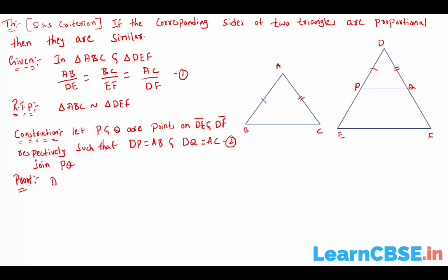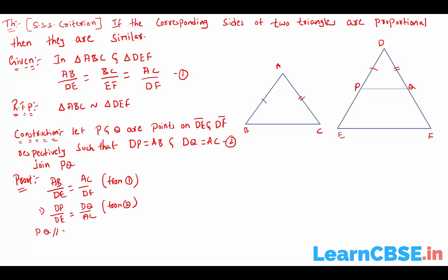We have AB by DE equals AC by DF from equation 1. Now I am replacing DP with AB and DQ with AC. So DP by DE equals DQ by DF. Therefore PQ is parallel to EF, by the Converse of the Basic Proportionality Theorem.